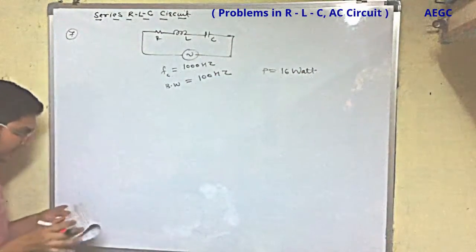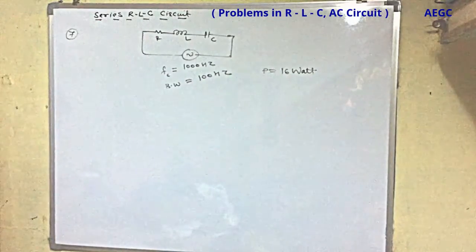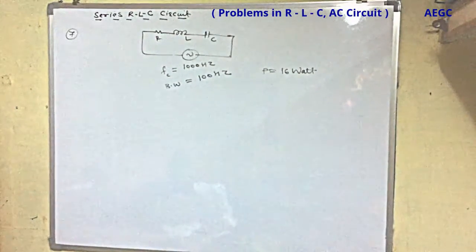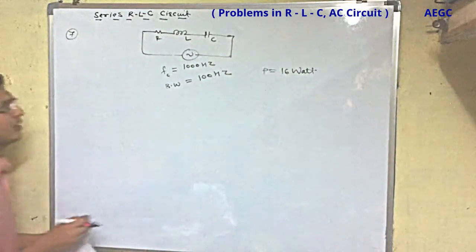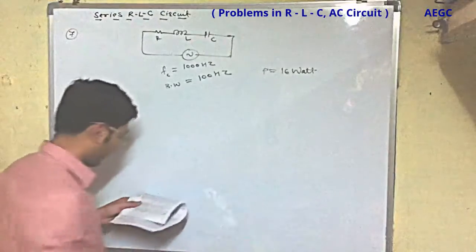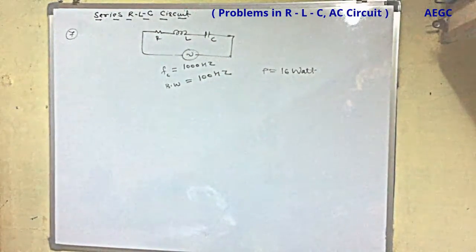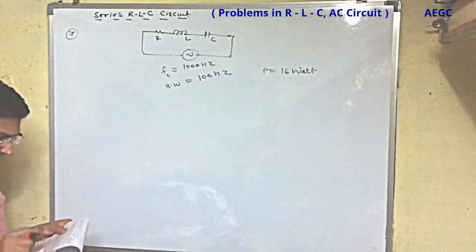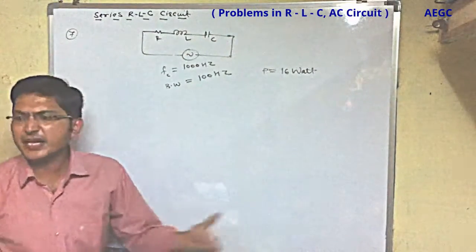First of all, quality factor we can remove. Resistance we can remove. When resonating frequency occurs, it will return power. How does the circuit behave at resonance? It will be resistive, so power is I²R.